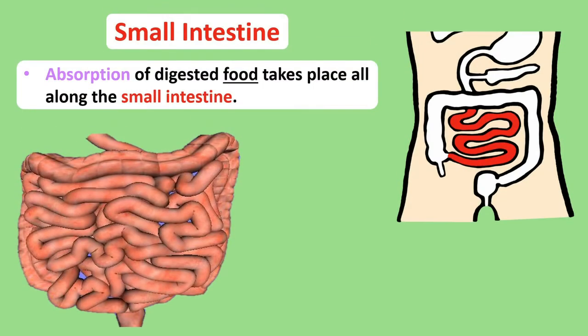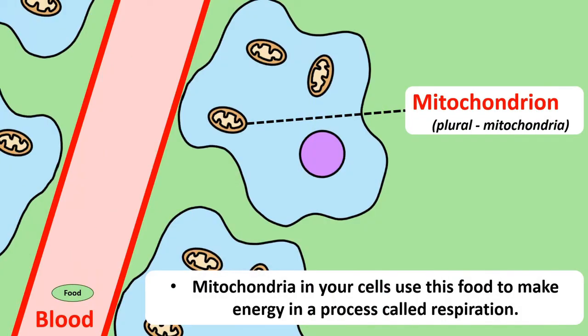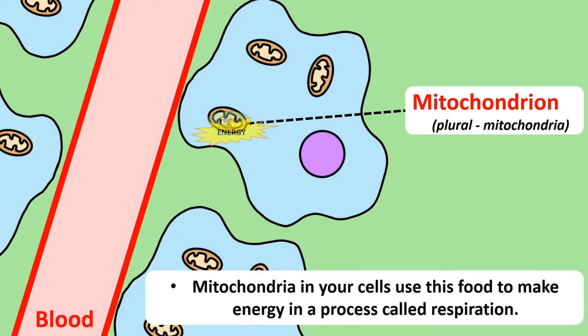Once food reaches the small intestine, it's now broken down into small enough pieces to go through the absorption stage. Digested food is absorbed into the blood along the small intestine, which if you could stretch it out in a straight line would be about 7 metres long. This food moves all around your body through the bloodstream. Food can then pass from the blood and into your cells, and the mitochondria in your cells are able to produce energy from this food. We study this in more detail in the video on the respiration topic.